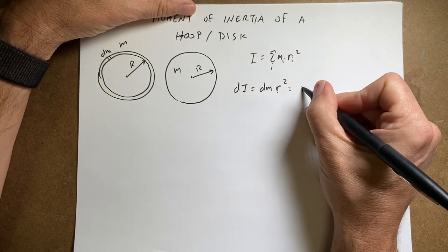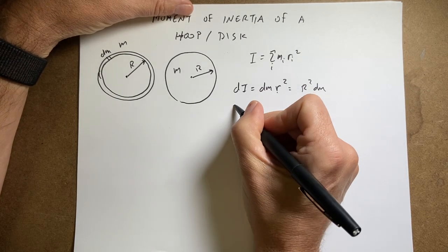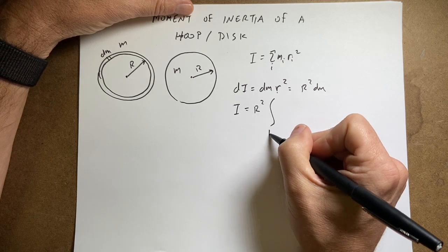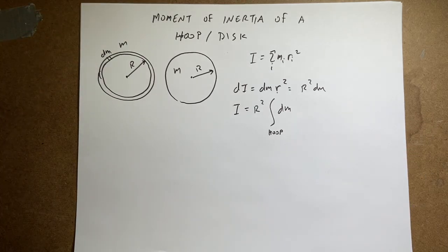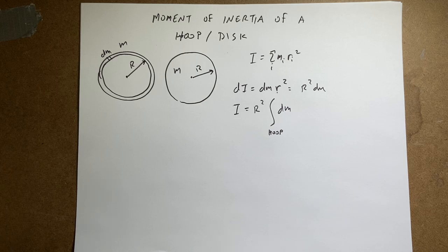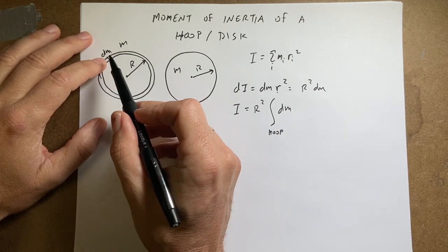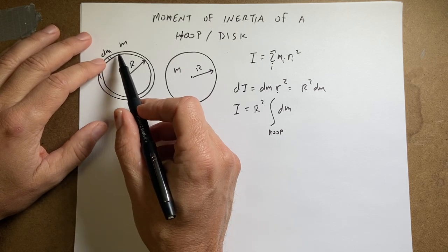So I get r squared times dm. Now I can integrate that and I get I equals r squared the integral over hoop dm. And I don't really need to do limits of integration. I could set this up as an integration in polar coordinates and go from theta equals zero to 2π. But it seems clear that if I'm adding up, if I break this into an infinitely small number of pieces and I add those pieces all up, I should just get m.